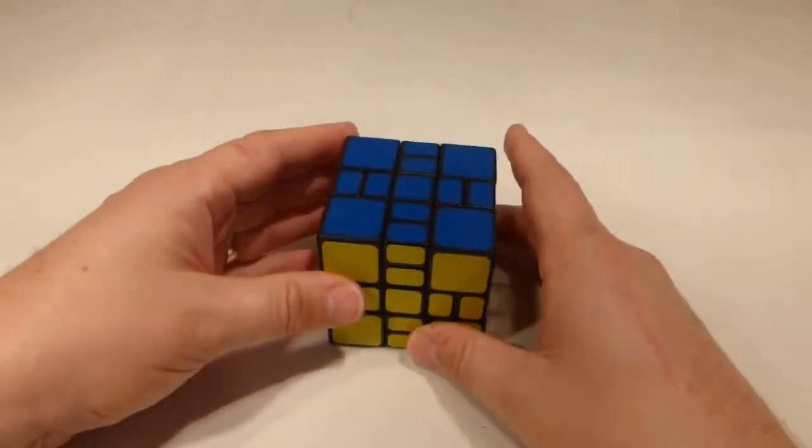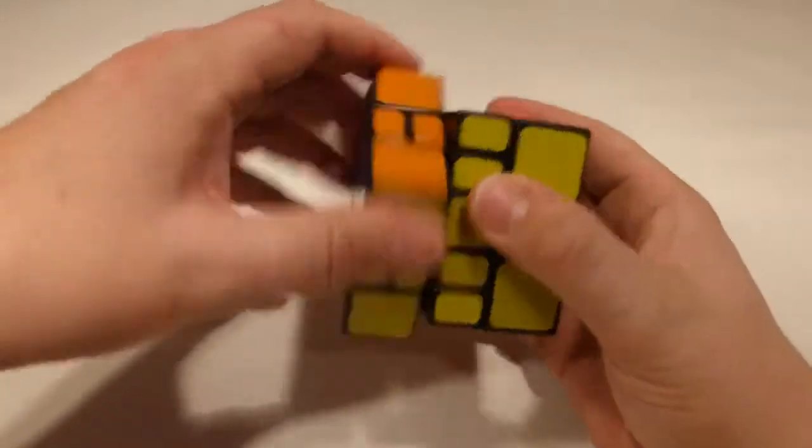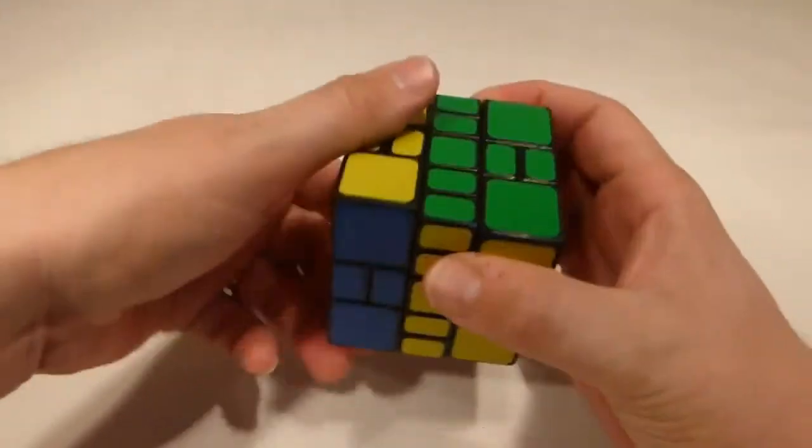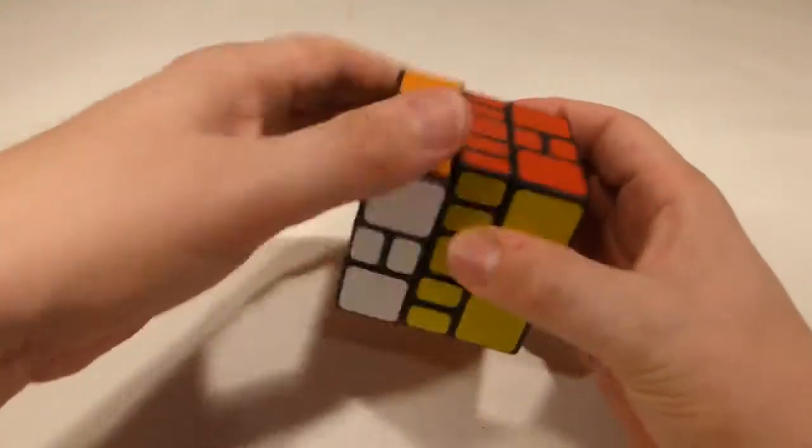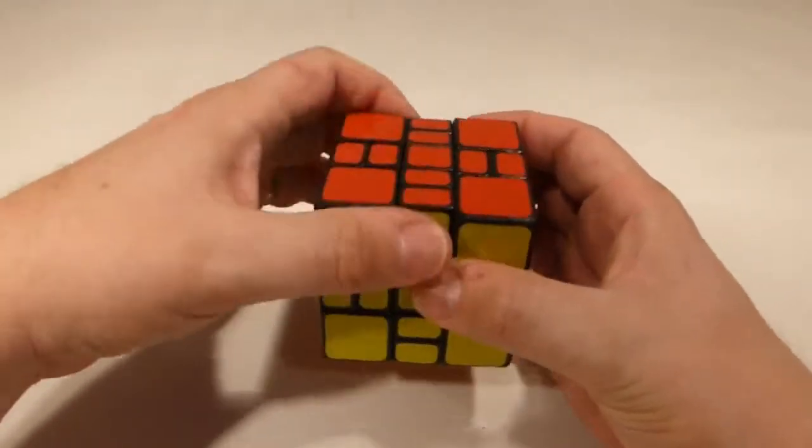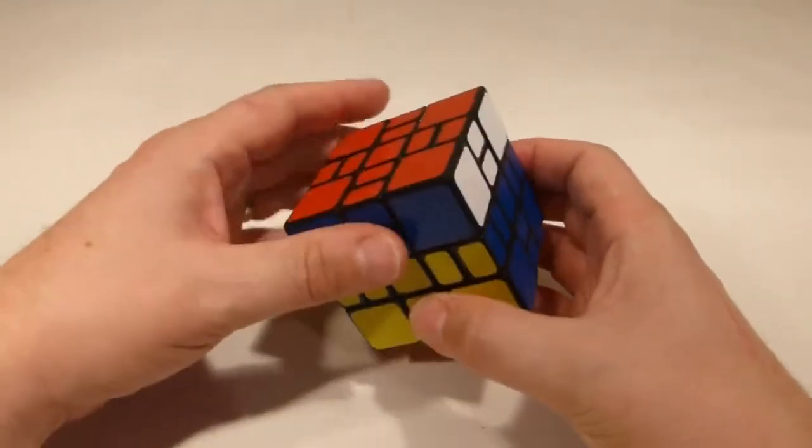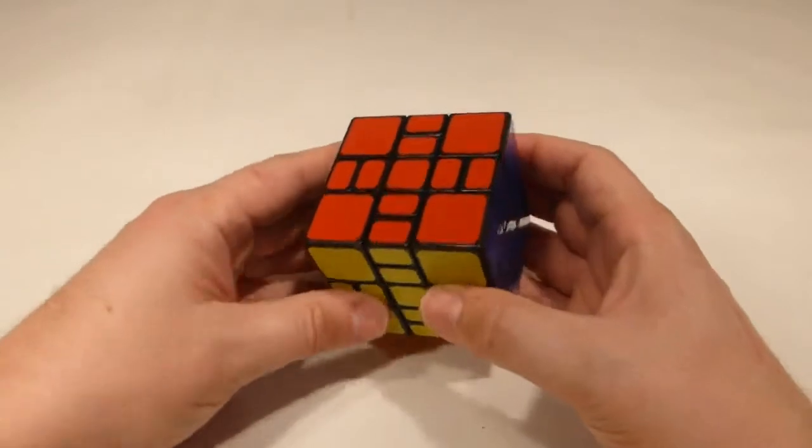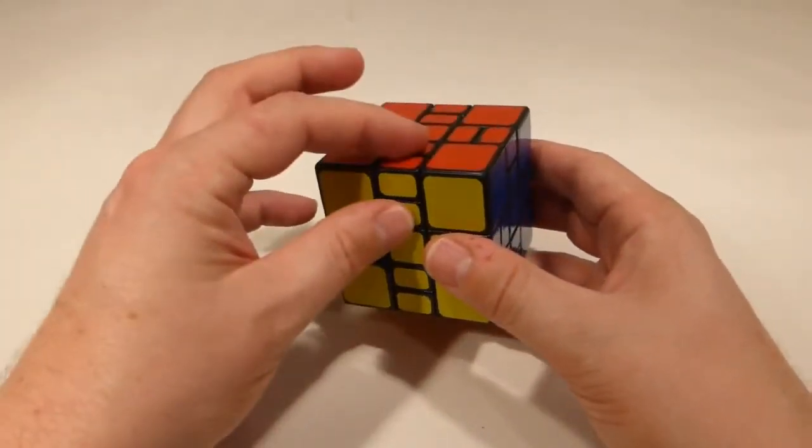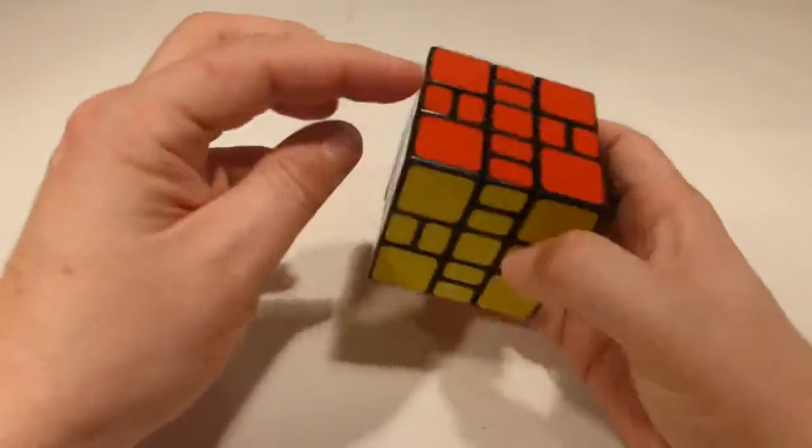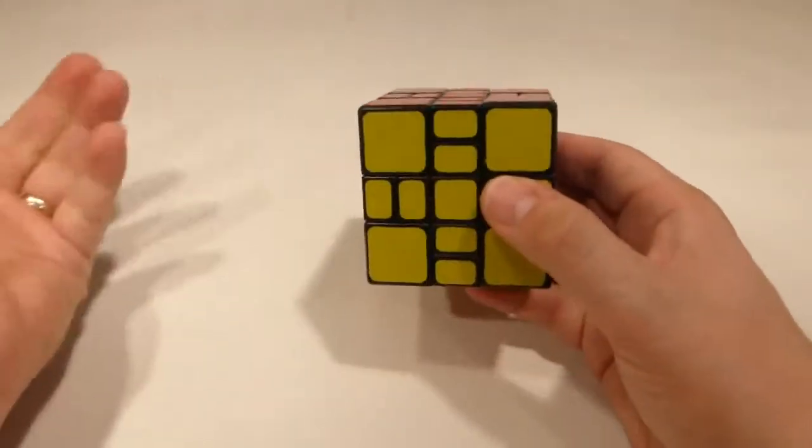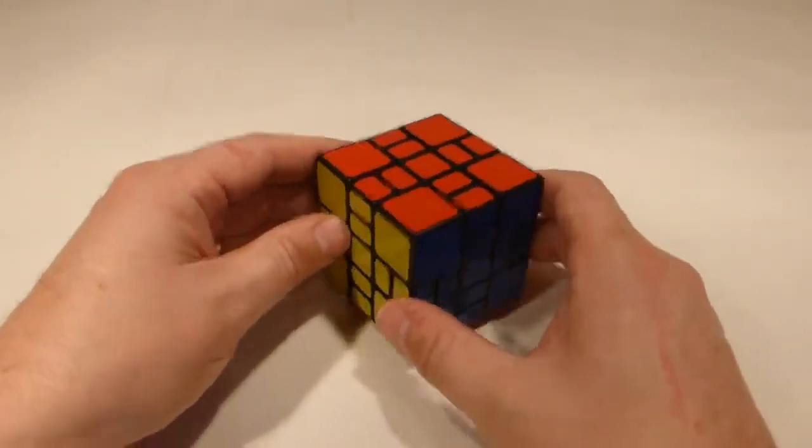What about the turning? You can still turn this—beautiful turning, really smooth, no problem at all. You can still solve it as a 3x3, so that's the general idea: reduce the cube to a 3x3 cube, fix the edges, you've got your corners, and Bob's your father's brother. That's how it works.